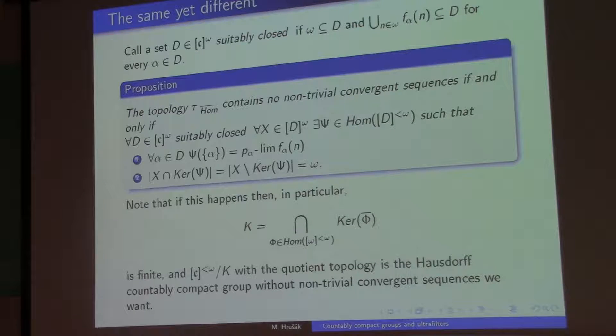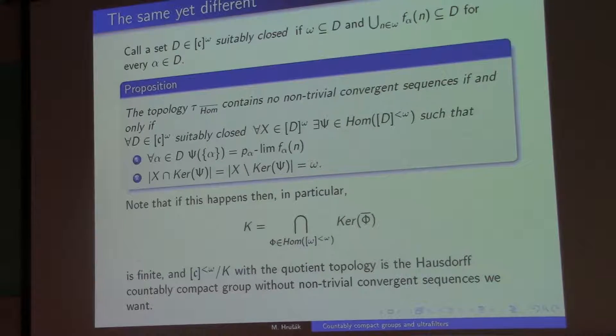So when does this group topology have the property that it has no convergent sequences? Well, one thing that one should notice is that this construction is locally countable. Meaning, if I want to know what happens at one point, say, singleton α, it has this α which converges to it from the bottom. Now, for each one of those, it has a sequence which converges from it to the bottom. So if I close it off, I just get a countable set.